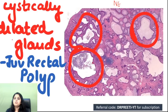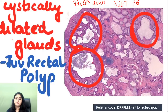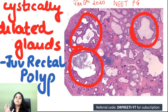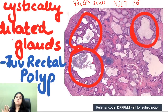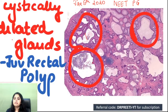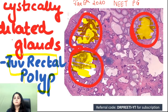NEETPG January 2020 question: a five-year-old boy with bleeding PR — an image was shown. The histology shows cystically dilated glands, which is the classical appearance of a juvenile rectal polyp. The image reinforces the diagnosis.